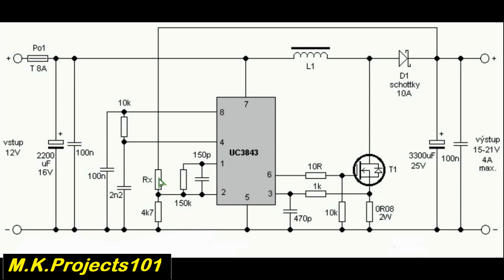So the frequency of operation or the switching frequency is determined by the resistor Rx and the 150 picofarad capacitor. So you can calculate this to give you the desired frequencies. So the rest is just basic biasing circuit.